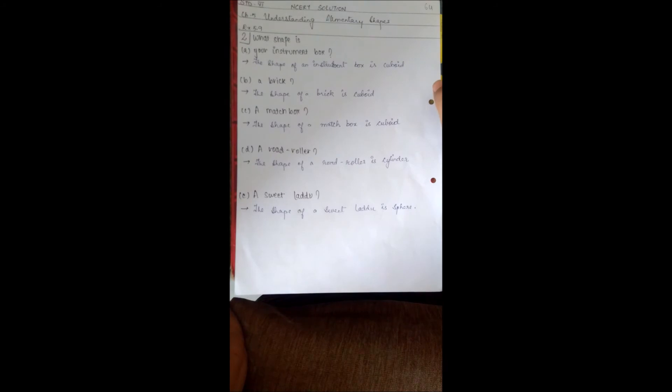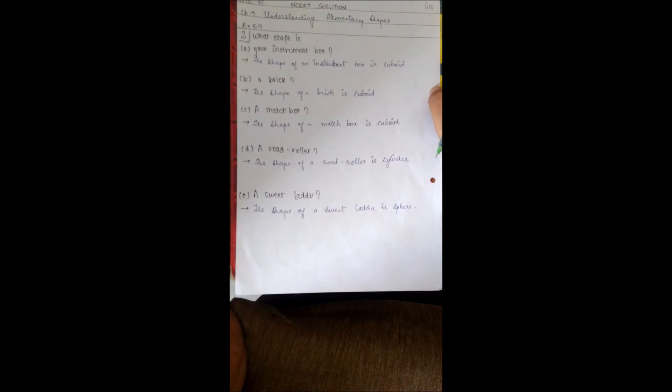A matchbox - see the matchbox - the shape of a matchbox is cuboid. A road roller - shape of a road roller is cylinder. You might have observed road rollers where the roads are under construction.